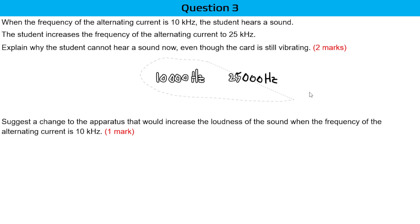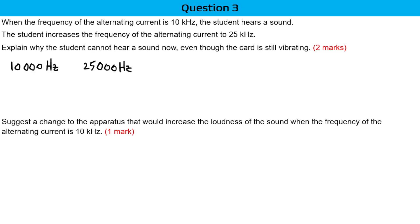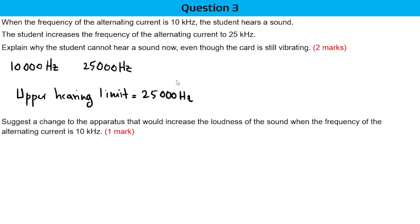Why is that? It is because, for humans, the upper limit of hearing is around 25,000 Hz — that is our audible range. You should say that anything above 20,000 Hz, humans cannot hear anymore, because our audible range is within 20 to 20,000 Hz.